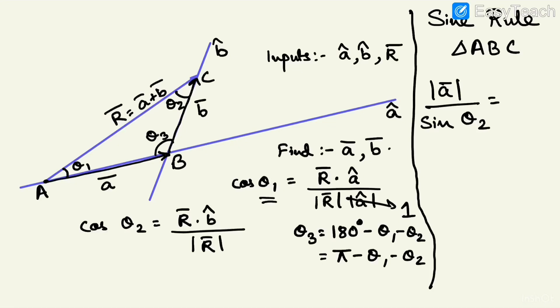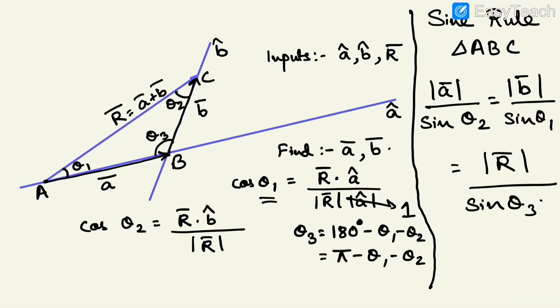The sine rule states: modulus of A vector divided by sine(theta2) equals modulus of B vector divided by sine(theta1) equals modulus of R vector divided by sine(theta3). We know all three angles and R, so we have two equations and two unknowns — modulus of A and modulus of B — and we can easily solve for them.